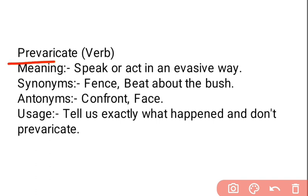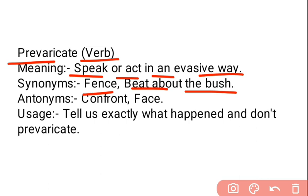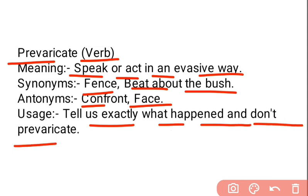Next word is 'prevaricate.' Prevaricate is a verb. Iska matlab hai to speak or act in an evasive way — bolna ya aisa action karna jo bohot zyada avoidable hota hai, kisi condition, person ya situation ko avoid karne ke liye. Isko 'beat about the bush' bhi bolte hain — idar udar ki baat karke chezon ko talna. Antonyms hain: to confront, face, or deal. Example: 'Tell us exactly what happened and don't prevaricate' — jo hua exactly woh batao, idar udar ki baat mat karo.